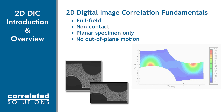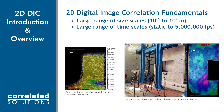2D digital image correlation can be used for a range of applications. Cameras and lenses are selected based off the field of view and the speed of the event. Here we see DIC data for a small capacitor chip that you would see on a printed circuit board, next to data from a concrete wall that is several meters in size. Cameras are available for quasi-static applications, ultra-high-speed applications, and anything in between.